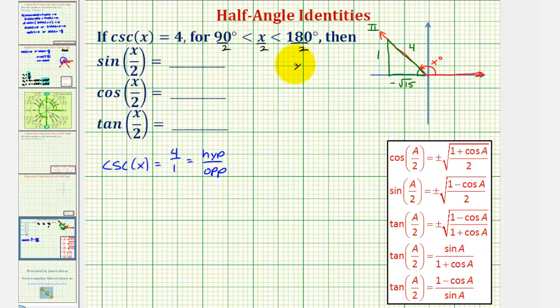notice how x over two would be greater than 45 degrees and less than 90 degrees, which means the angle x divided by two would be in the first quadrant, where we know all of these trig function values would be positive. So we don't have to worry about the plus or minus sign here, we know all of our trig function values here will be positive.